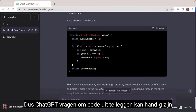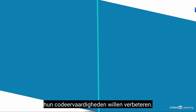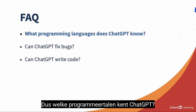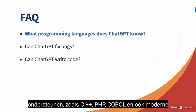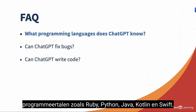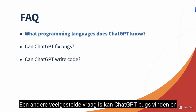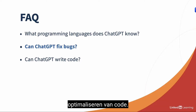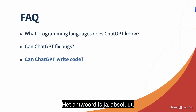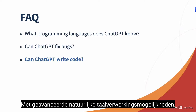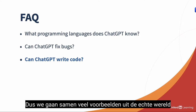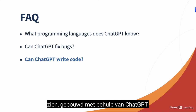Let's look at the most common FAQs about ChatGPT. What programming languages does ChatGPT know? It supports many languages including C++, PHP, COBOL, Ruby, Python, Java, Kotlin, and Swift. Can ChatGPT find and fix bugs? Yes — it was trained on millions of open-source lines of code, making it very helpful for processing, debugging, and optimizing code. Can ChatGPT write code? Absolutely — with advanced natural language processing and support for many programming languages, it can assist with coding assignments and web projects.